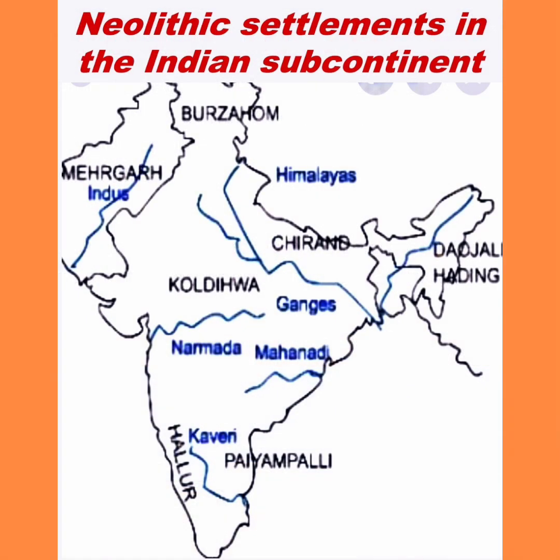Remains of several Neolithic settlements have been found in the Indian subcontinent, such as Mehergarh near the Bolan Pass in Pakistan, Burzahom in Jammu and Kashmir, and Daojali Hading in Assam. One of the earliest village sites found in the Indian subcontinent is at Mehergarh, which had rectangular houses made of mud and mud bricks. In the Indian subcontinent, Neolithic people practiced hunting, gathering, farming, and herding. At some sites like Mehergarh and Burzahom, macroliths and bone tools have also been found.